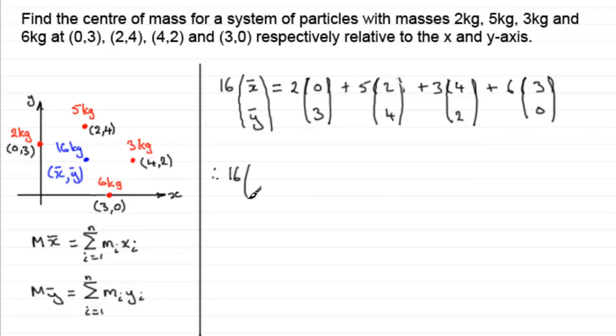So if we work this out now, we've got 16 times (x bar, y bar) equals, all I need to do is just work out what the total of the top and bottom lines are. If we multiply out the top, we've got 2 times 0 which is 0, plus 5×2 is 10, plus 3×4 is 12, plus 6×3 is 18. And the bottom: 2×3 is 6, plus 5×4 is 20, plus 3×2 is 6, and 6×0 is 0. The top line comes to a total of 40, and the bottom line comes to a total of 32. So we've got (40, 32).